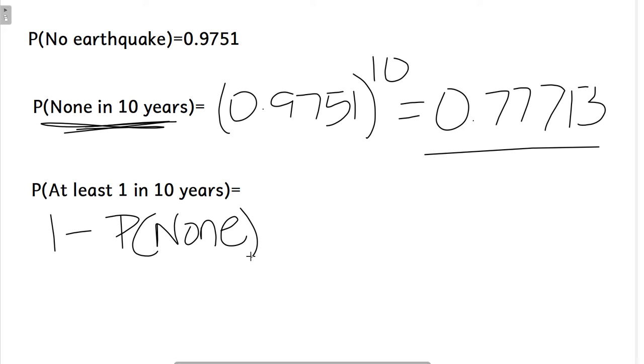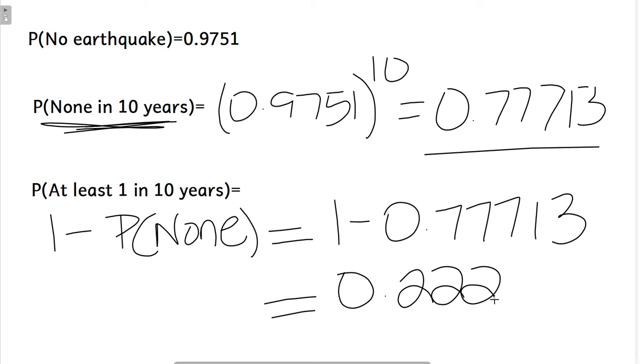So that means that it's 1 minus 0.777713. And we get that number and it is 0.2228. So we can just say it's about 0.22.